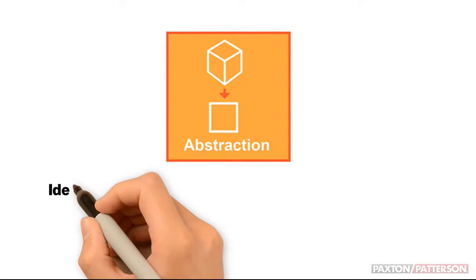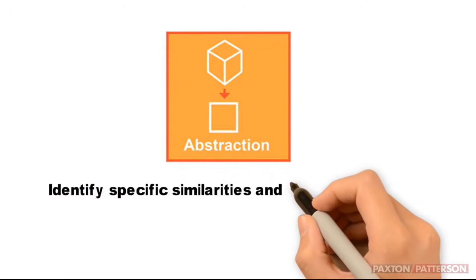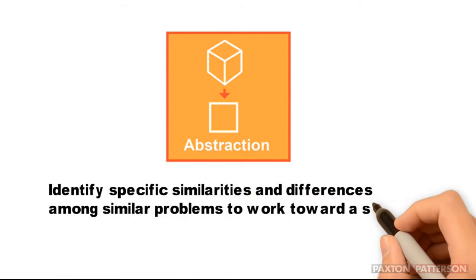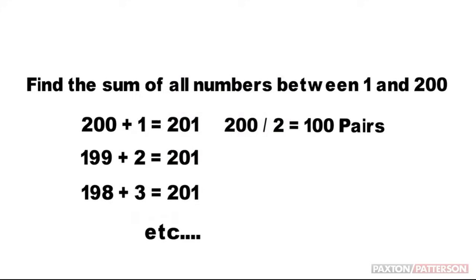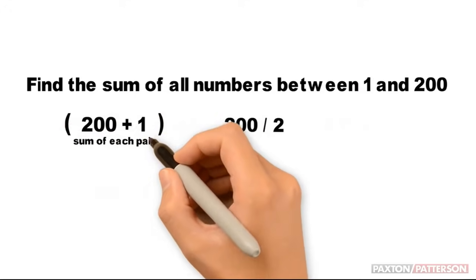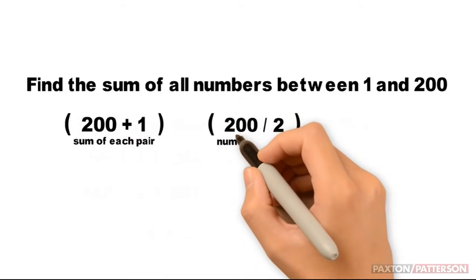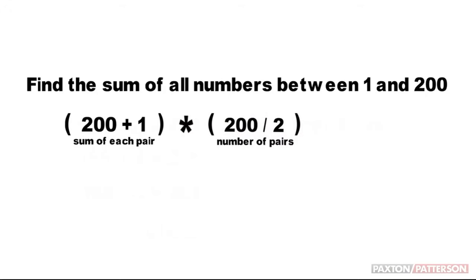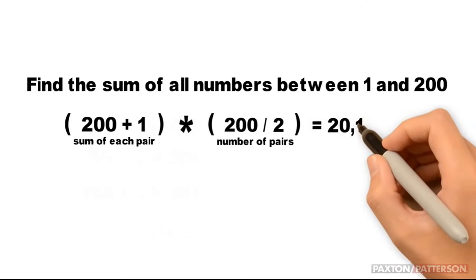Step three of the computational thinking process is abstraction. Abstraction suggests we identify specific similarities and differences among similar problems to work toward a solution. In our original problem, we had to find the sum of all numbers between 1 and 200. All the pairs have the same sum, so we can get rid of these. If we focus only on the important details, we see that we can express the problem as an equation: 200 plus 1 tells us the sum of each pair; 200 divided by 2 tells us the number of pairs. Multiply them together, and we find that the sum of all numbers between 1 and 200 is 20,100.